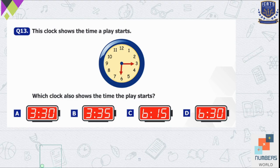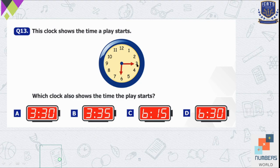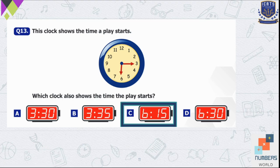Question number 13. This clock shows the time a play starts. Which clock also shows the time the play starts? We convert the analog time to digital. The hour hand is almost at six, so our hour is 6. The minutes hand is at 3, so we multiply 3 by 5 to find the minutes — 5 threes are 15. Option C is the digital clock representing 6:15 and is the correct answer.